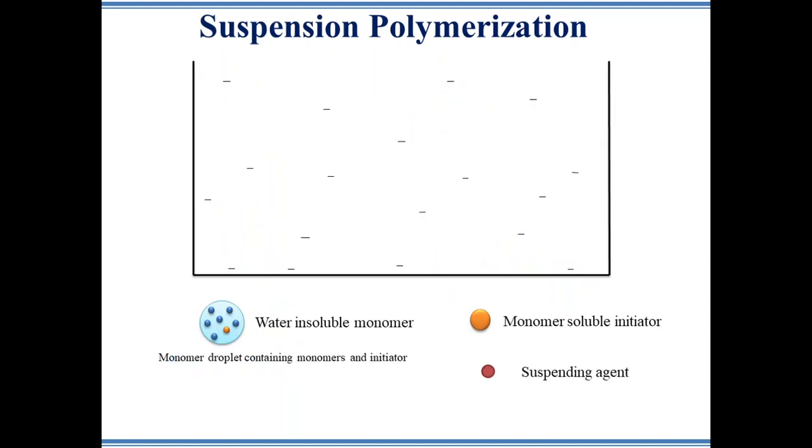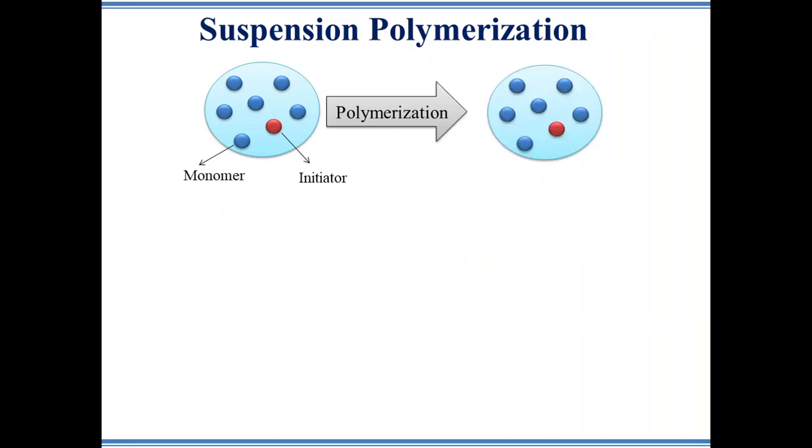Suspension polymerization is similar to bulk polymerization and could be considered bulk polymerization within a droplet. This is one of the most widely used polymerization techniques. It is also called bead or pearl polymerization. In this method, initiator is dissolved in hydrophobic monomer. Then the hydrophobic monomers containing initiators are mechanically suspended in water in presence of suspending agent.